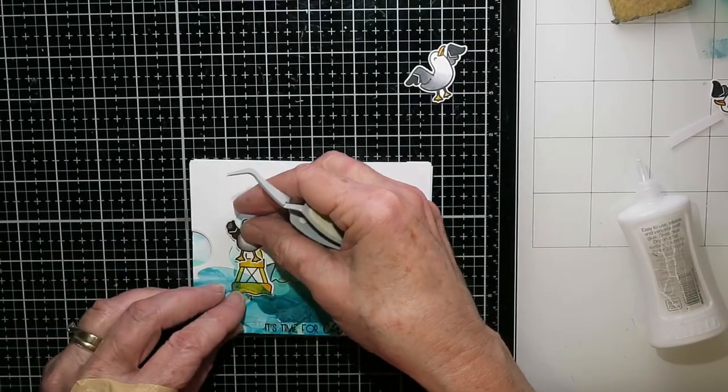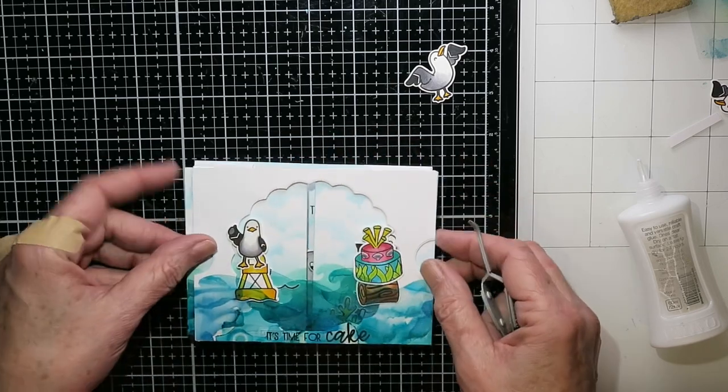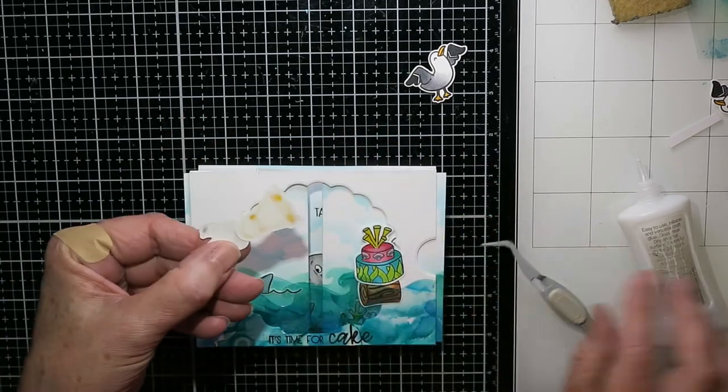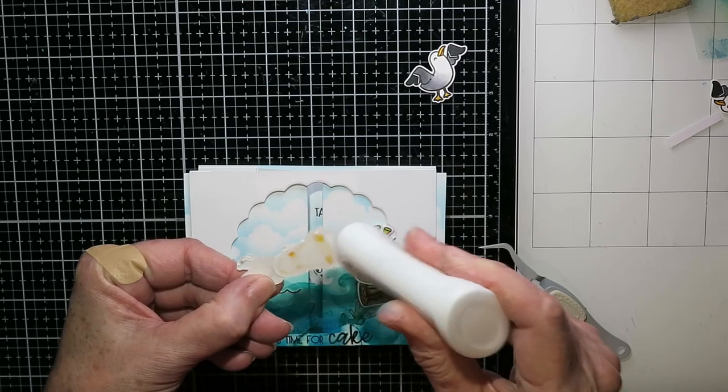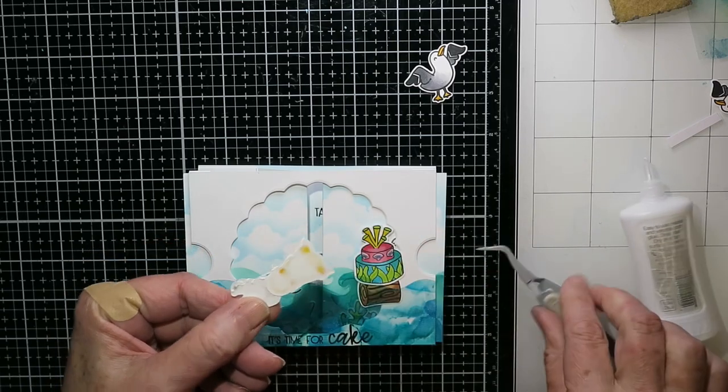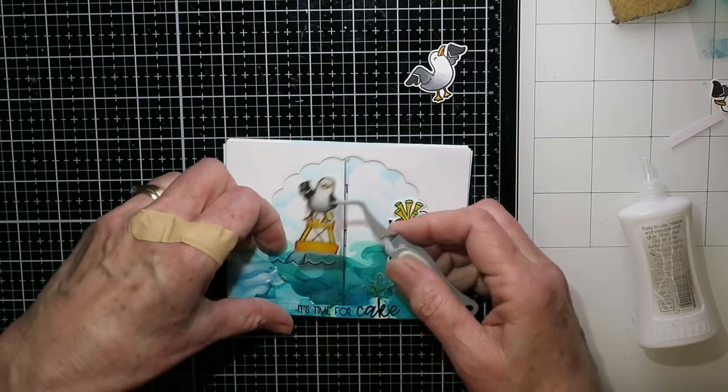And over on this side, it's exactly the same thing. I'm trying to hide that shark fin. So this little seagull, again, he's only going to get glued on the outside edges and then just attached to the outer circle.